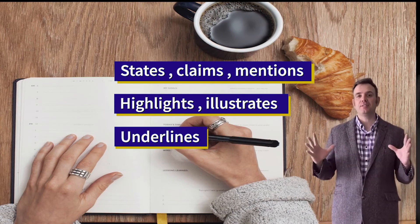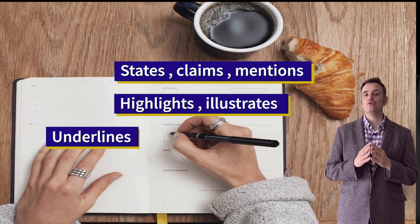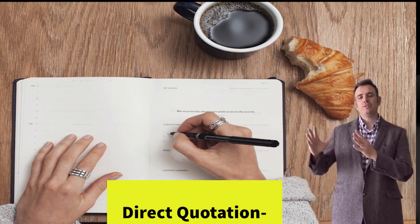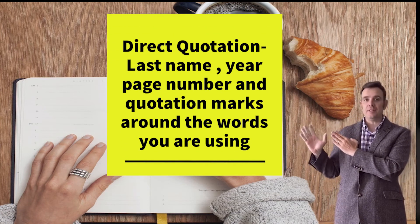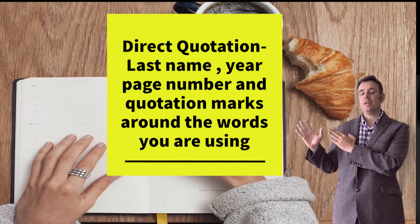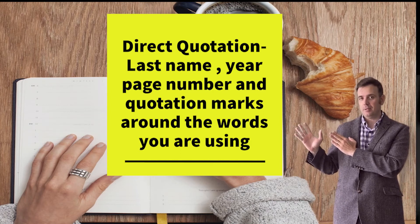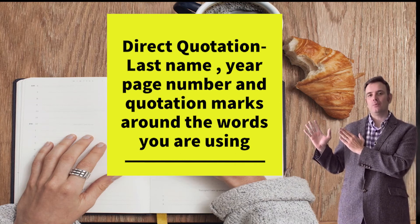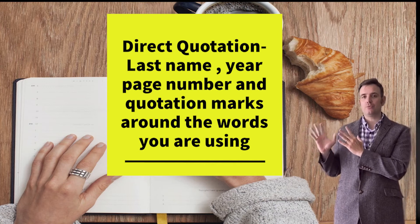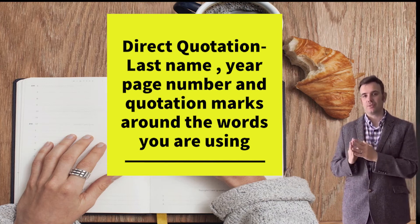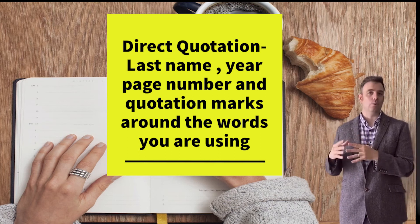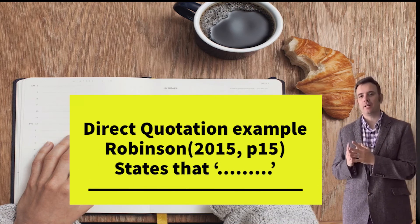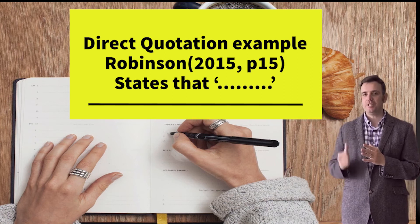When you want to use the exact words or sentence an author has written, you use a direct quotation. Using Harvard referencing style, you'd have the last name followed by the year, but the key difference is you also include the page number in brackets. Then you put quotation marks around the words or sentence you are copying. The quotation marks tell the reader these words are not yours — they belong to the author of the book or article.